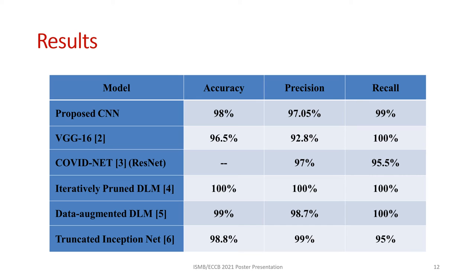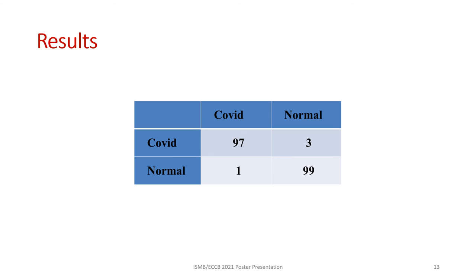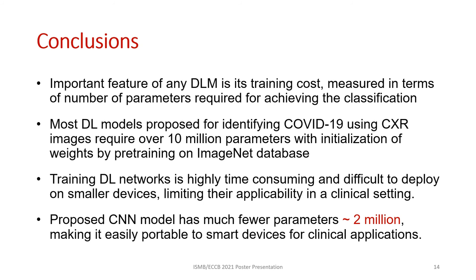From the table here, it can be noted that the performance of the proposed model is almost similar to that of deep learning models like VGG-16 and other published studies. The confusion matrix shows the number of correctly classified samples in both classes by our model. Most of the models we compared have more than 10 million parameters and were pre-trained using the ImageNet database, making them difficult to deploy in a clinical setting. The proposed model has roughly 2 million parameters, which makes it portable to small devices.